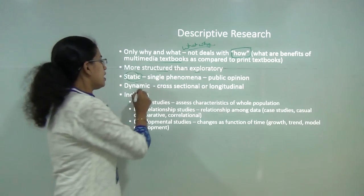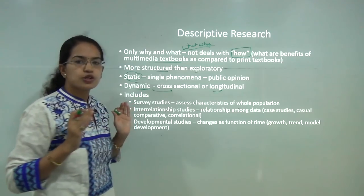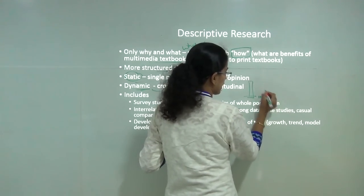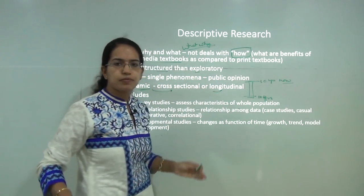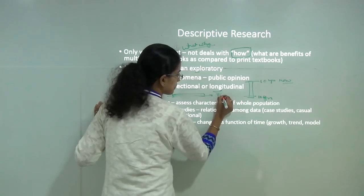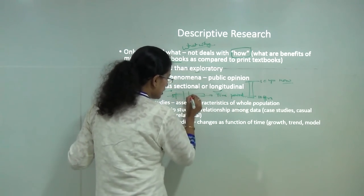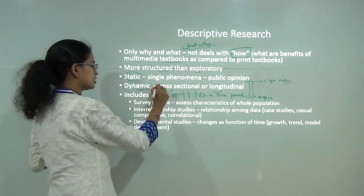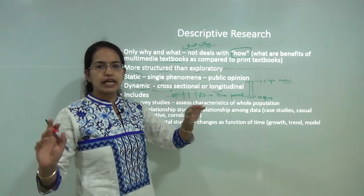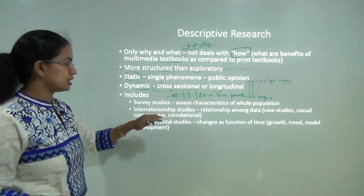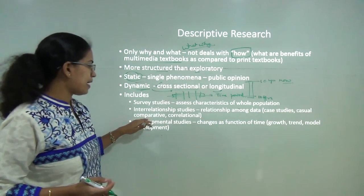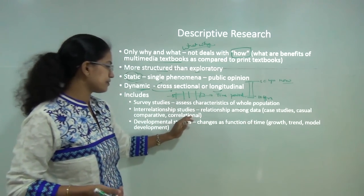Dynamic descriptive research is based on two methods: cross-sectional or longitudinal. Longitudinal means how things vary over time — for example, 10 years back and 10 years from now. Cross-sectional study is over the same time period — the time remains constant but you are trying to understand different aspects simultaneously. Descriptive research can further be done under three heads: survey studies assessing characteristics of a whole population, interrelationship studies examining relations among data through case study, causal comparative study, or correlational study, and developmental studies tracking changes over time.